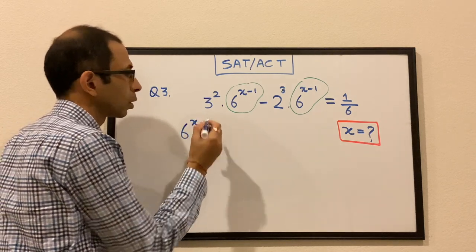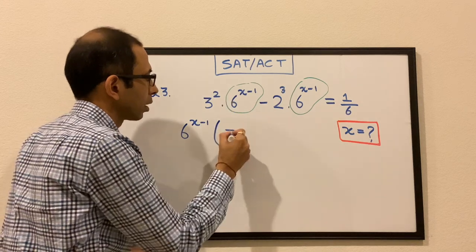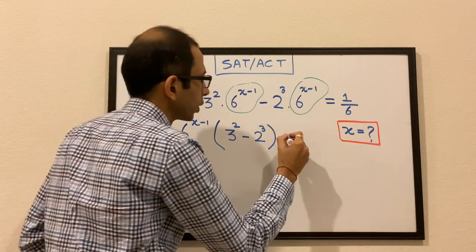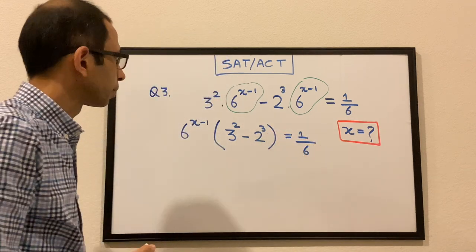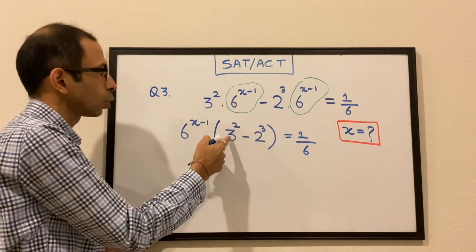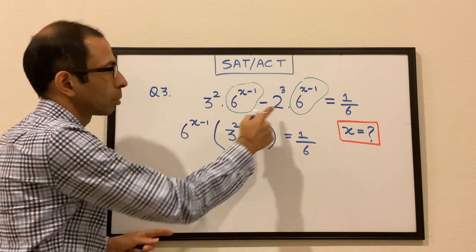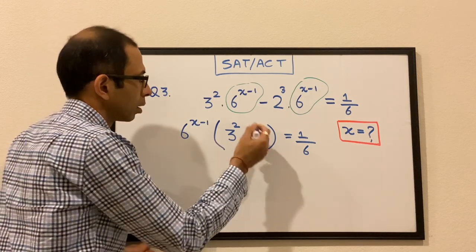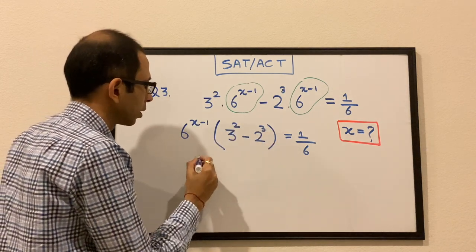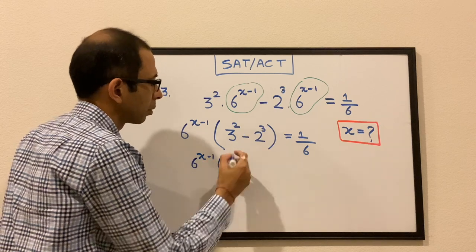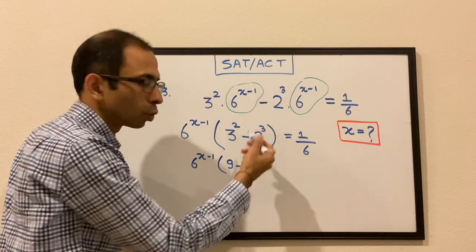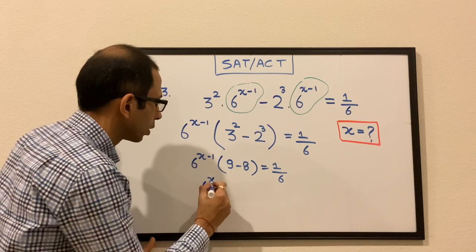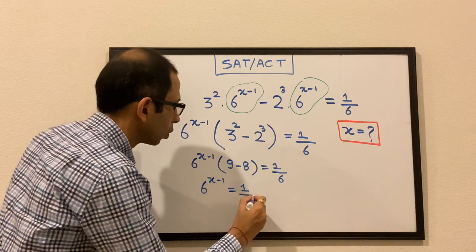Factoring out 6^(x−1), we get 6^(x−1) × (3² − 2³) = 1/6. Solving inside the parenthesis: 9 − 8 = 1. So 6^(x−1) × 1 = 1/6, which gives 6^(x−1) = 1/6.